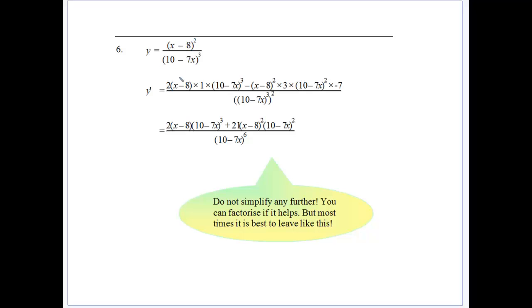And then we derive the top, which would be 2 lots of x minus 8 to the power of 1, times the derivative of x minus 8, times the denominator, minus the numerator, times the derivative of the denominator. So we bring the 3 down, subtract 1 from the power, times the derivative of 10x, 10 minus 7x, which is minus 7.